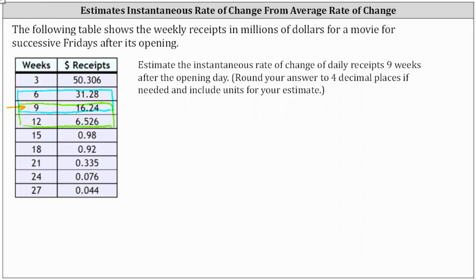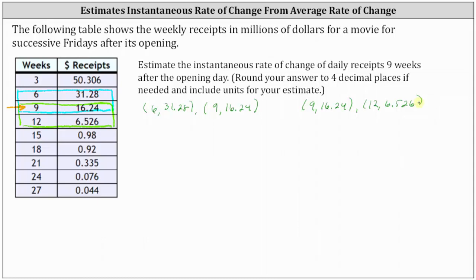Let's list out the ordered pairs. We'll first find the average rate of change using the ordered pairs (6, 31.28) and (9, 16.24). Then we'll find the average rate of change using the ordered pairs (9, 16.24) and (12, 6.526). Notice how we're finding the average rates of change to the left of nine weeks and to the right of nine weeks.